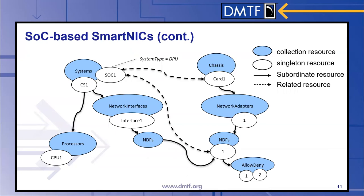Looking at a resource map for this class of SmartNIC, we have computer system CS1 on the left side, but now we also have a new system in the collection called SOC1, highlighting that the system-type property contains the value "DPU." We see from the relationship map that SOC1 is providing offload capabilities for network device function 1 on the right side. SOC1 could also have its own processor collection, memory collection, storage collection, and drives — it is a full embedded system and can be modeled as such.